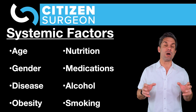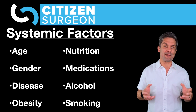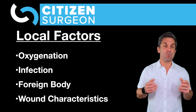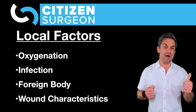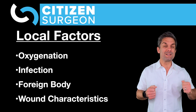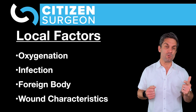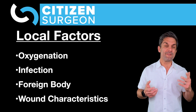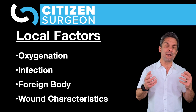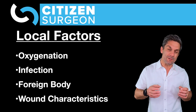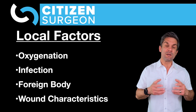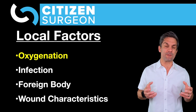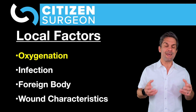Today: local factors. There are four major local factors we're going to be talking about: the oxygen content of the wound, infection and inflammation, foreign bodies, and different wound characteristics — whether it's a stellate wound, a simple laceration, or a broad-based wound where you can't get the edges together. But first, oxygenation — what does the oxygen content of the wound have to do with healing?